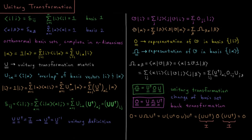This unitary matrix holds all the power in terms of representing anything in either basis set, because there might be many different operators relevant to a given system that we want to express in different basis sets. There are cases where we must transform into different basis vectors, and so finding these unitary matrices gives us all the information needed to interconvert any matrix we like into either representation of either basis set.